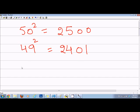So as you can see, again, if I have 48, what I will do is I will subtract 2 from 25, that is 23, and then take square of 2 which is 4. So the answer is 2304.